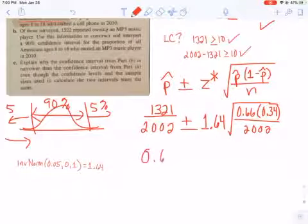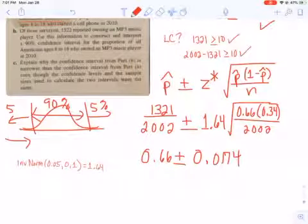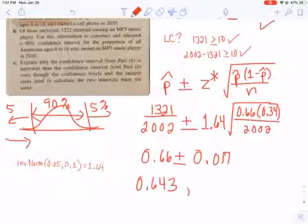So I've got 0.66 plus or minus. On my calculator, I'm going to plug in 1.64 times square root of 0.66 times 0.34 divided by 2,002. I get standard error plus or minus 0.0174. I'll round to 0.017. So if I subtract that from 0.66, I get 0.643. And if I add it, I get 0.677. So now I have a confidence interval.